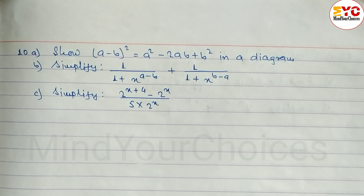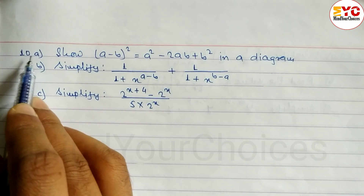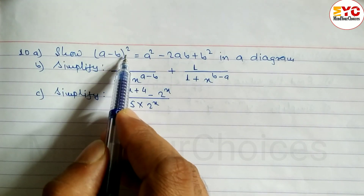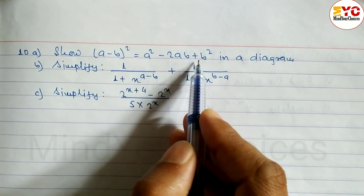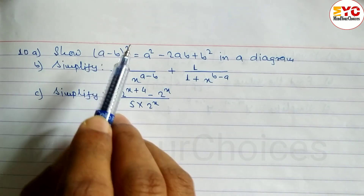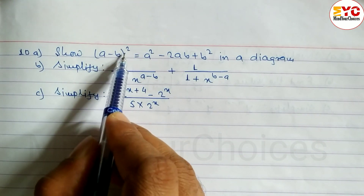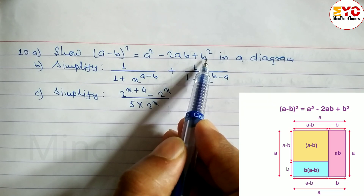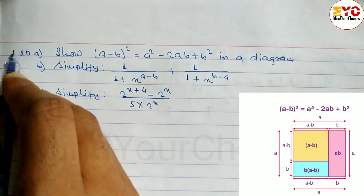This is Class 8 BLE model question. Question number 1, part A. So A minus B whole square is equal to A square minus 2AB plus B square. Remember this formula — the formula for A minus B whole square is A square minus 2AB plus B square — but here we have to show it in a diagram.